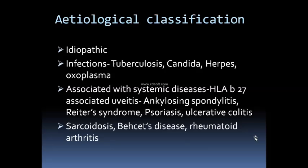The systemic associations of uveitis are a very important topic from the exam point of view. HLA-B27 associated uveitis is seen in patients who have ankylosing spondylitis, Reiter's syndrome, psoriasis, and ulcerative colitis.